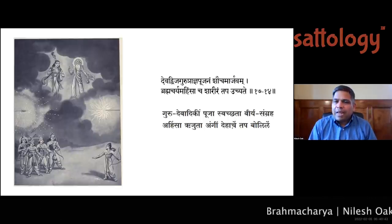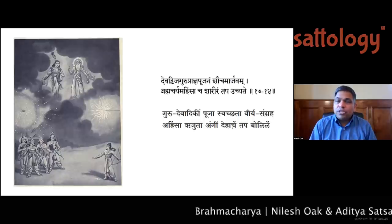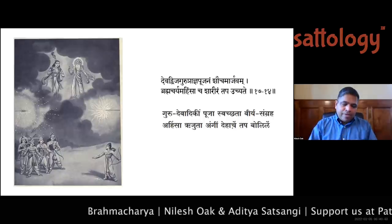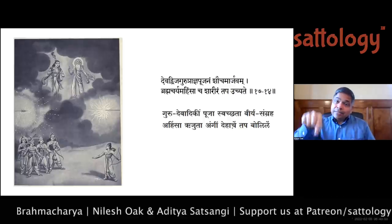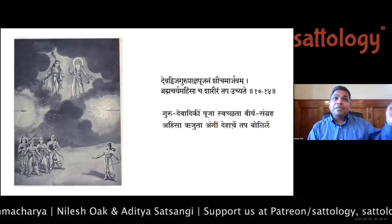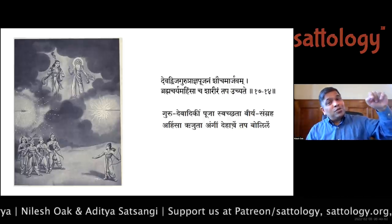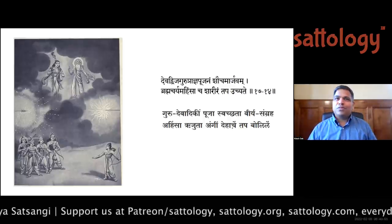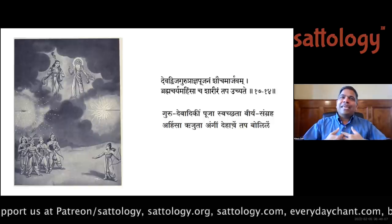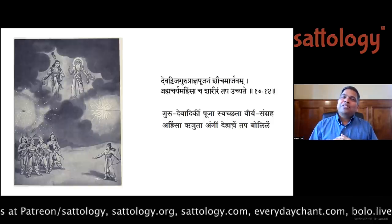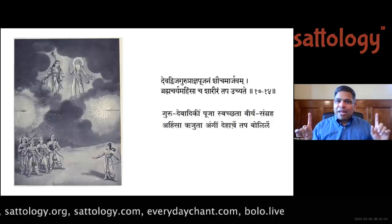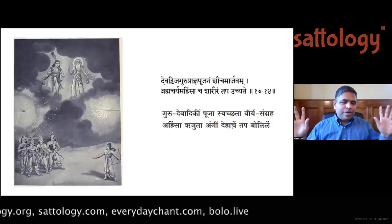Therefore in the Shramana parampara of Jainism, there are also ladies — which you don't see in Buddhism, at least not for a long time. My point is: what is said in the Bhagavad Gita is also followed by Mahavir ji in Jainism and by Buddha — very consistent in the Sanatana parampara. These are different sampradayas, not different religions.